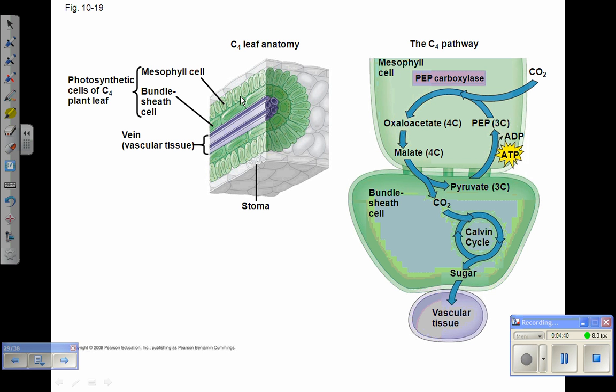Remember that plasmodesmata are those cell-to-cell openings that link the cytoplasms of cells together in plants. C4 leaf anatomy functions to allow the mesophyll cells to fill the bundle sheath cells with CO2 by incorporating it into a four carbon intermediate and sending it through the plasmodesmata.